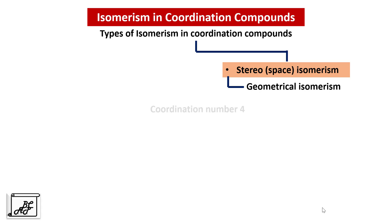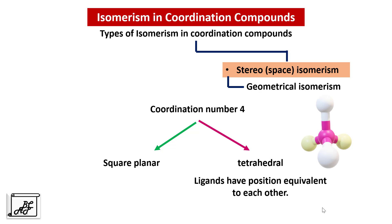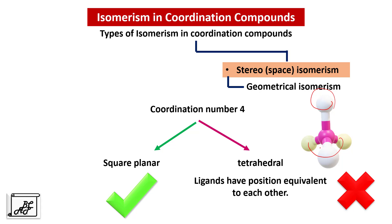Let us study geometrical isomerism with coordination number 4. Coordination compounds with coordination number 4 can have two types of geometries: square planar and tetrahedral. In tetrahedral complexes the ligands have equivalent positions to each other — they are at the same distance and at the same angle, so they cannot be distinguished. Hence tetrahedral complexes do not show geometrical isomerism. In square planar complexes, two ligands are adjacent and two are opposite, so square planar complexes can show geometrical isomerism.